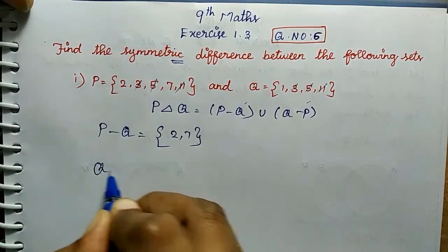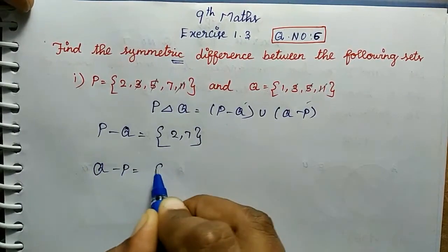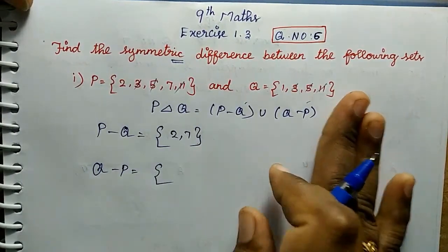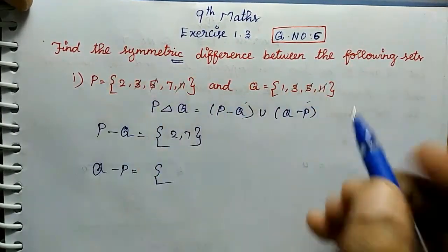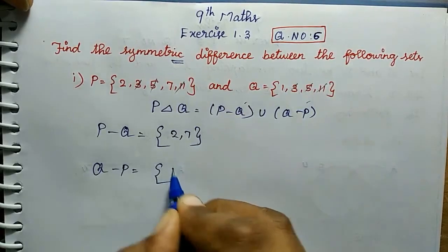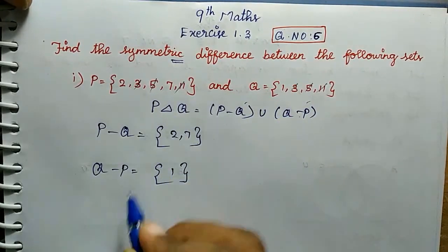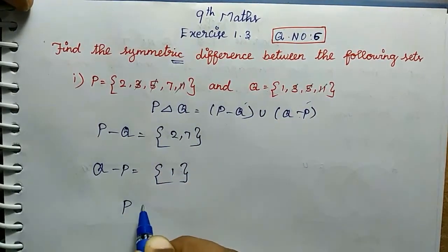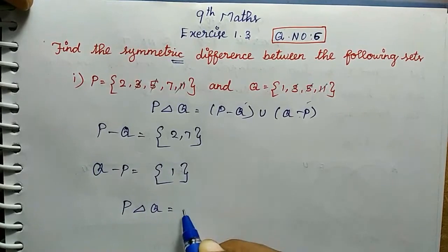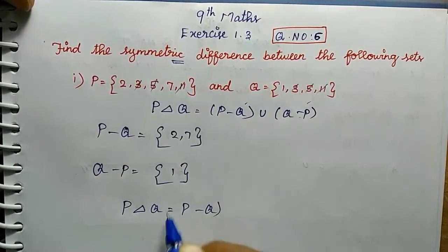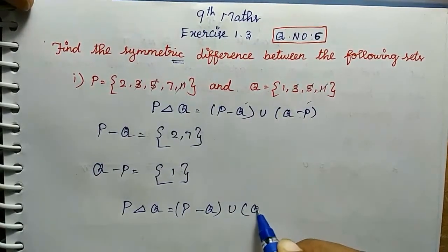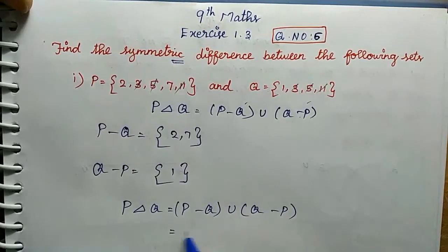Then Q minus P. Q minus P, Q set minus, remaining value is 1. We will subtract. So, formula of substitution. P symmetrical Q that is equal to P minus Q union Q minus P. So in the two values we will join.